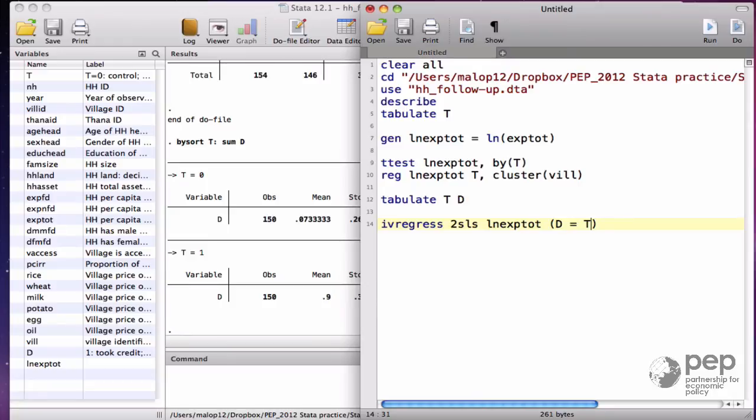We like the regression command because it automatically tests the null hypothesis that the treatment has no effect, and also because we can adjust the standard errors using the option cluster. This will not change the estimates of the TOT, but it would take into account the intra-cluster correlation, rising the standard errors, and making the confidence interval larger.